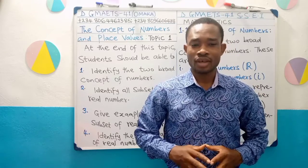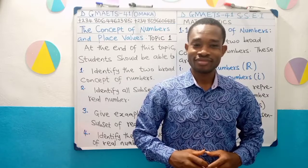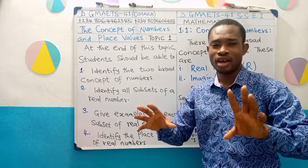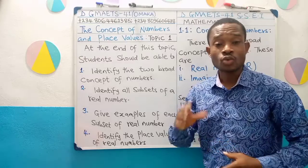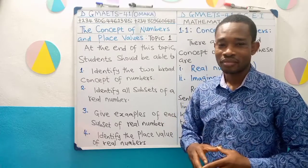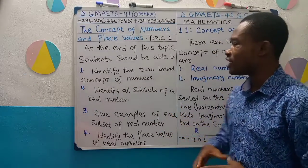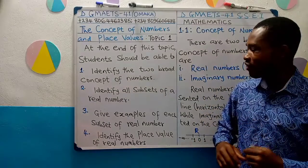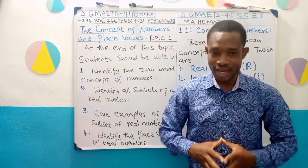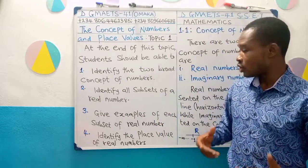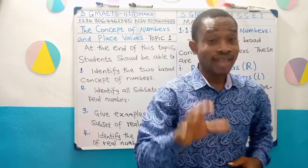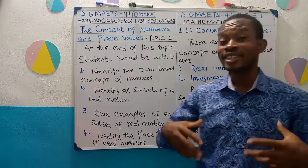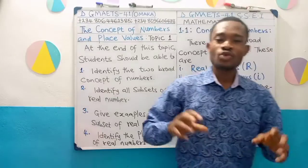At the end of this topic, what are you expected to know? We have four basic objectives on the board. One, you should be able to identify the two broad concepts of numbers. Two, you should be able to identify all the subsets of a real number. Three, you should be able to give examples of the subsets of a real number. And finally, you are expected to identify the place value of real numbers.